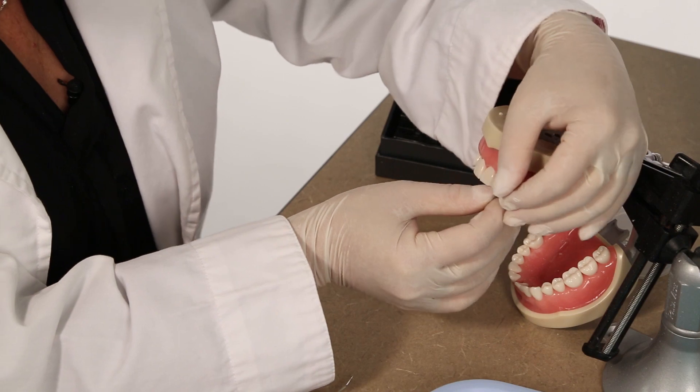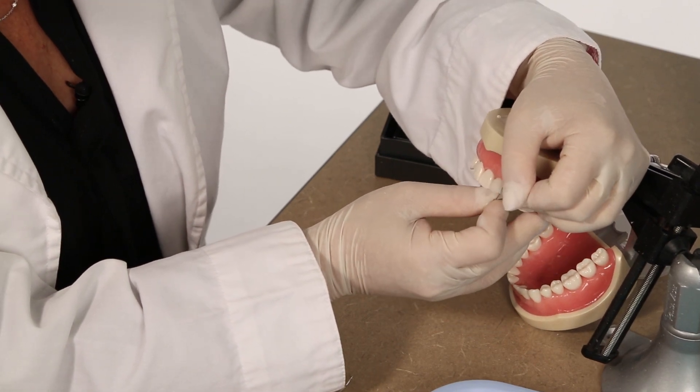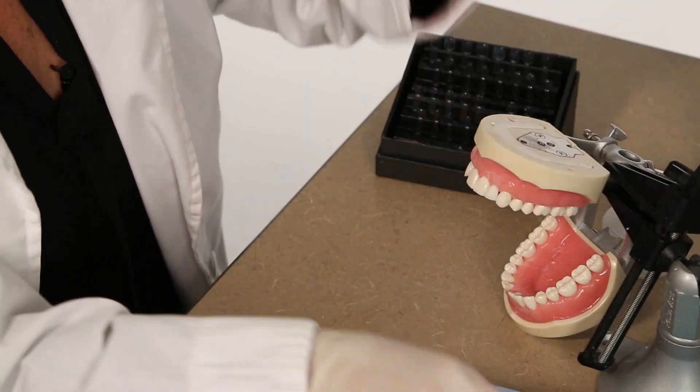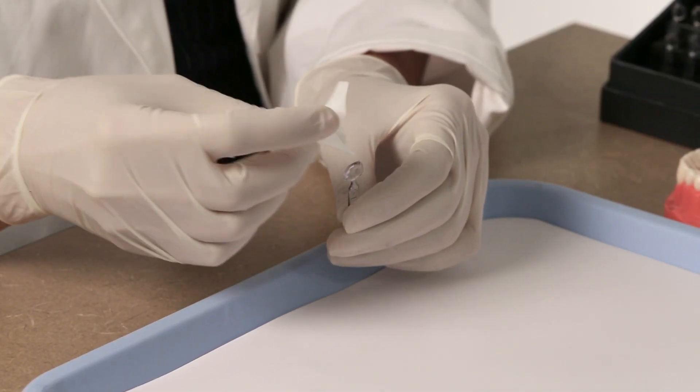Finishing the veneer can be achieved with an interproximal saw, followed by interproximal polishing strips to allow for clean contact points.